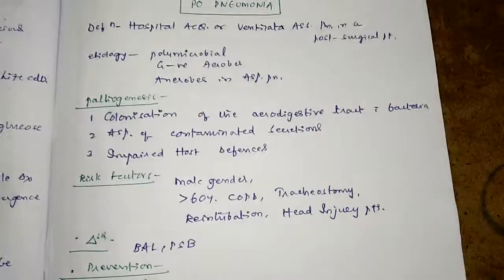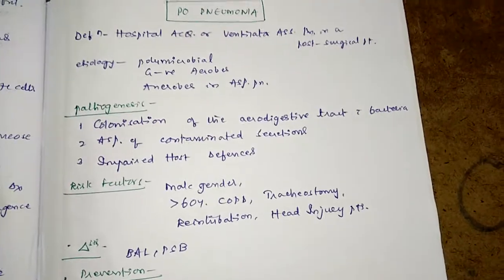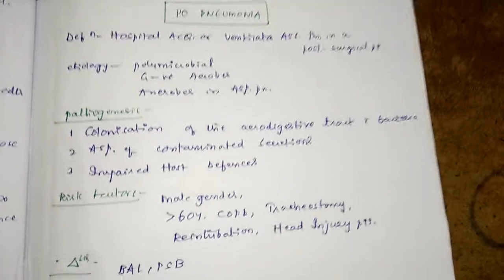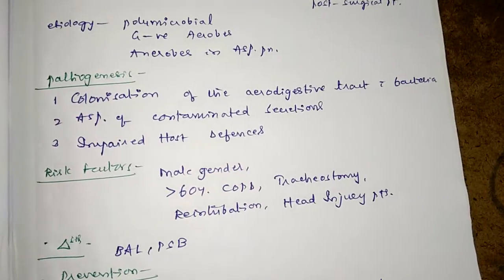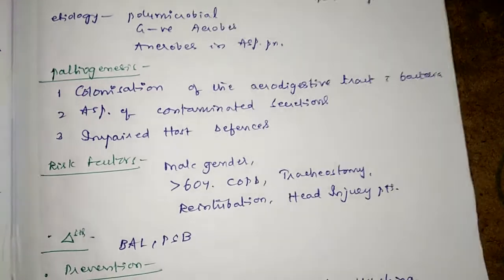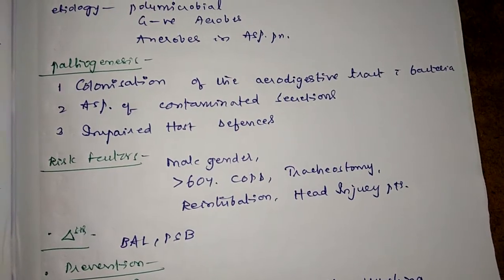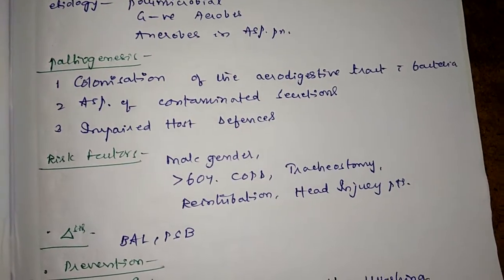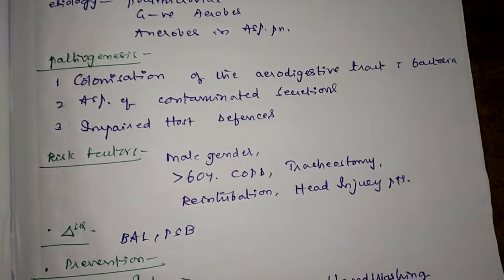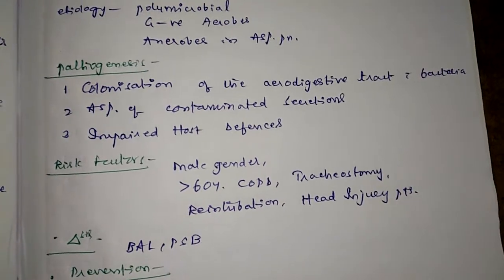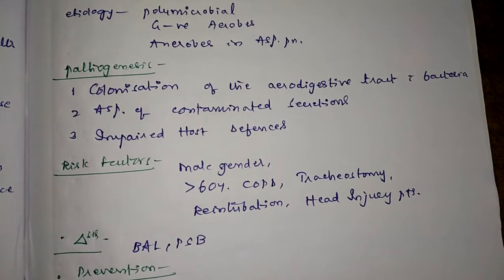The pathogenesis of postoperative pneumonia involves colonization of the aerodigestive tract with bacteria, aspiration of contaminated secretions, and impaired host defenses — because of the bypassing of the mucociliary escalator by endotracheal tubes and tracheostomy tubes.